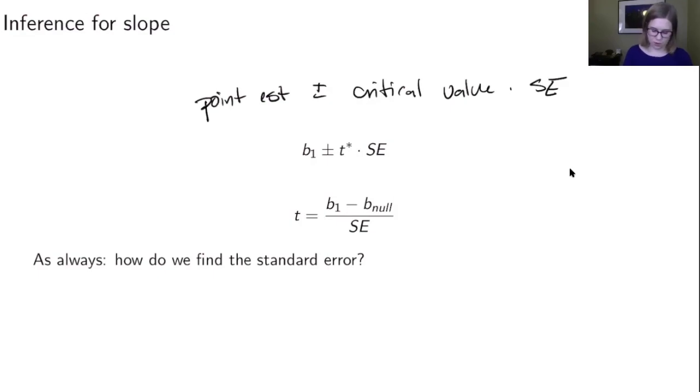For a hypothesis test, we're always doing point estimate minus null value over standard error. In this case, that would be b₁, our point estimate for the slope, minus our null slope value over the standard error. That would be a t-value that we would look up in the t distribution to find a p-value. This is for confidence intervals, and this is for hypothesis tests.